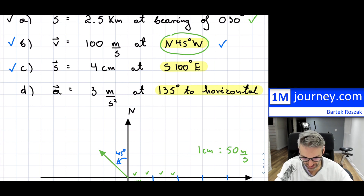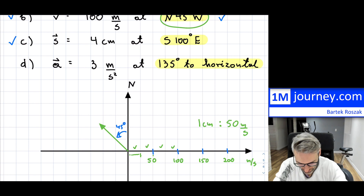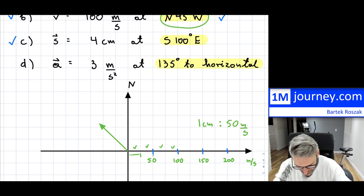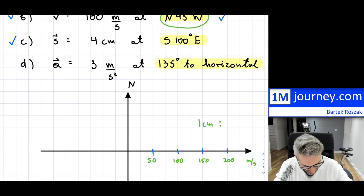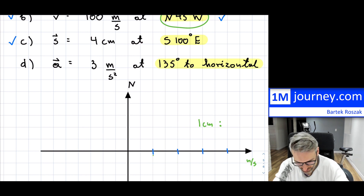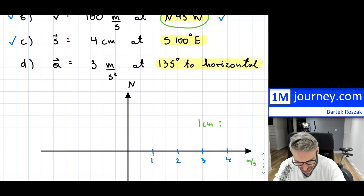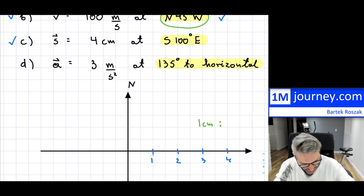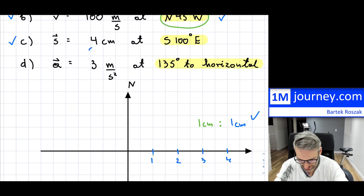So this is 4 centimeters in length, and we can actually pretty much do it on one go. Let's clean it up. This is going to be probably a 1-to-1 scale. Let's make those 1 centimeter, 2 centimeters, 3 centimeters, 4 centimeters. So this is 1 centimeter to 1 centimeter.